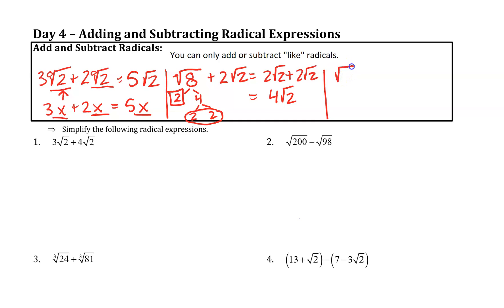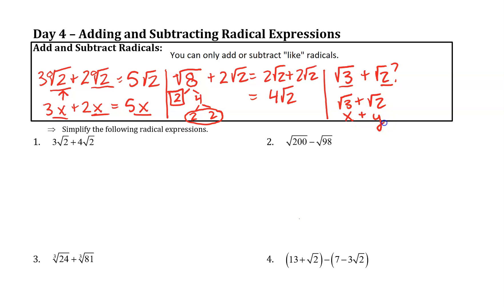What about if we had something like the square root of 3 plus the square root of 2? Those are not like radicals, so we leave them just as they are — it would be like saying x plus y. Square root of 3 and square root of 2 are not alike, so we do not combine them.